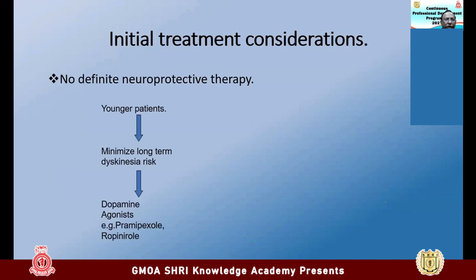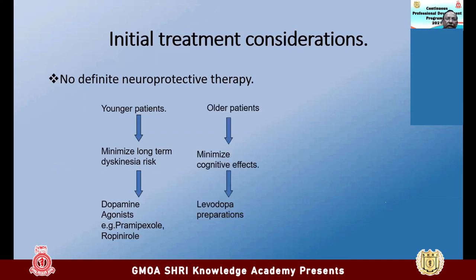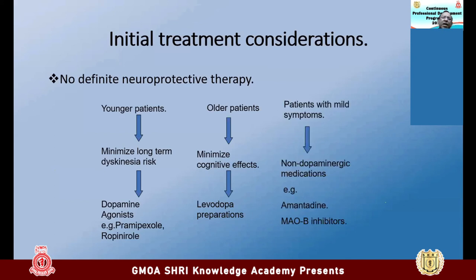There are three clinical treatment scenarios. In a young patient — around 45 to 50 years — start a dopamine agonist to minimize long-term dyskinesia risk and step up as needed. In an older patient — 65 to 70 years — start levodopa directly to minimize cognitive effects. For patients with very mild symptoms who do not yet need dopaminergic medication, consider starting MAO-B inhibitors, which may help slow disease progression to some extent, though evidence is not conclusive. These patients should always be followed up.